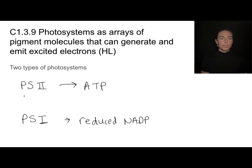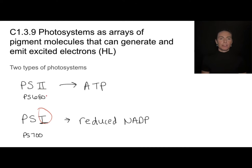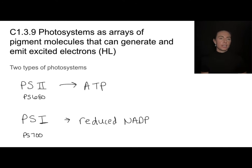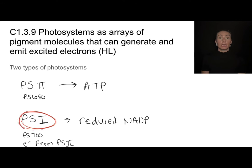You may hear people refer to photosystem two as photosystem 680 or photosystem one as photosystem 700, because these are the wavelengths of light at which they work most efficiently. That's a great way to remember them, because two then one is confusing, but 680 actually comes before 700. Both photosystems excite electrons — that's a similarity — but they also need that electron to be replaced, and where that replacement electron comes from is very different. The electron lost from photosystem one is going to be replaced by photosystem two.